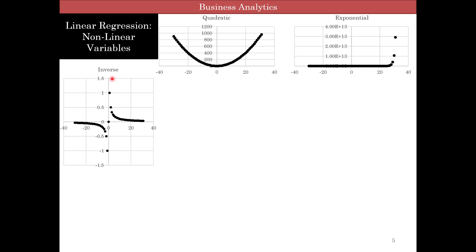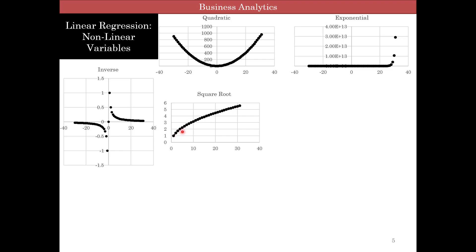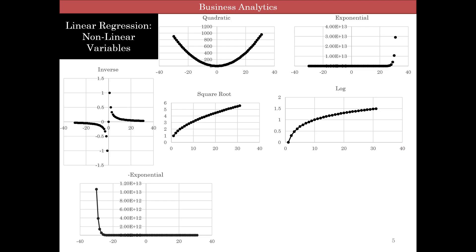Here is an example of inverse, where you have 1 divided by the independent variable — it drops and then flattens out, or if negative, it increases and flattens out. A square root increases initially somewhat linearly and then gets more flat. A log is similar but the flattening happens earlier and shrinks things faster. Here is a negative exponential example, which gets pretty close to zero very quickly. And finally, cubed goes in an S-like curve.